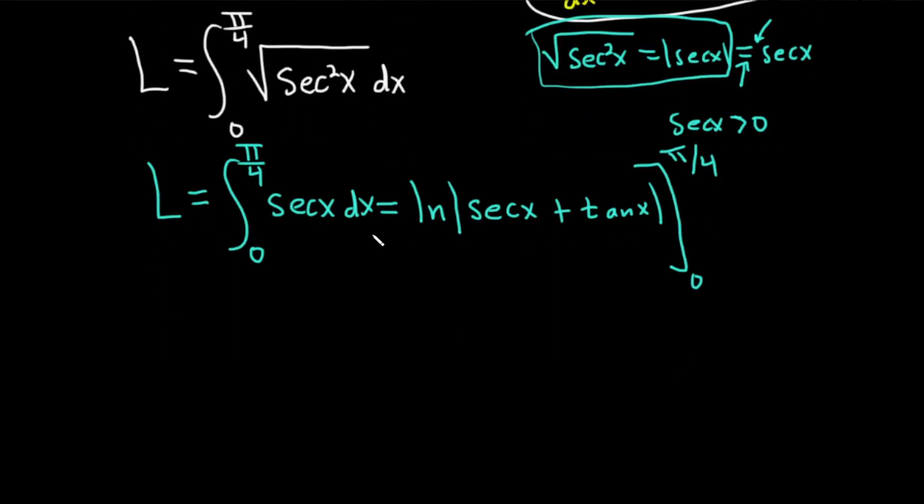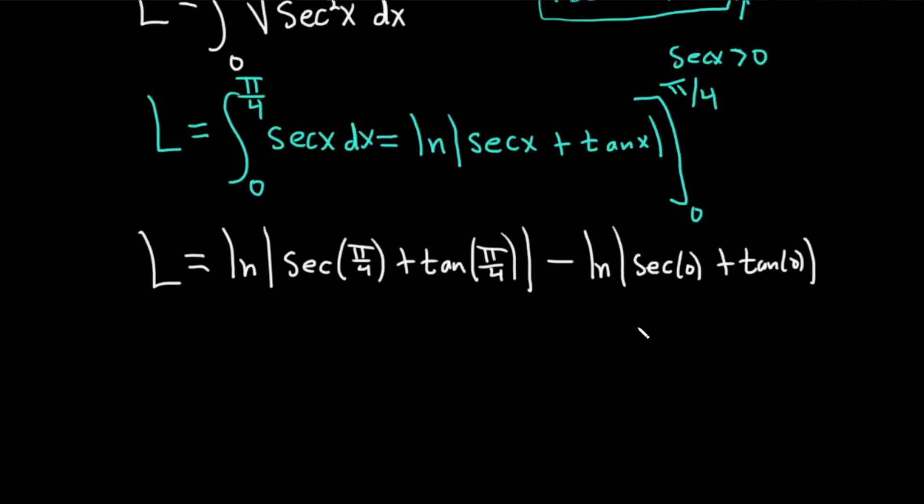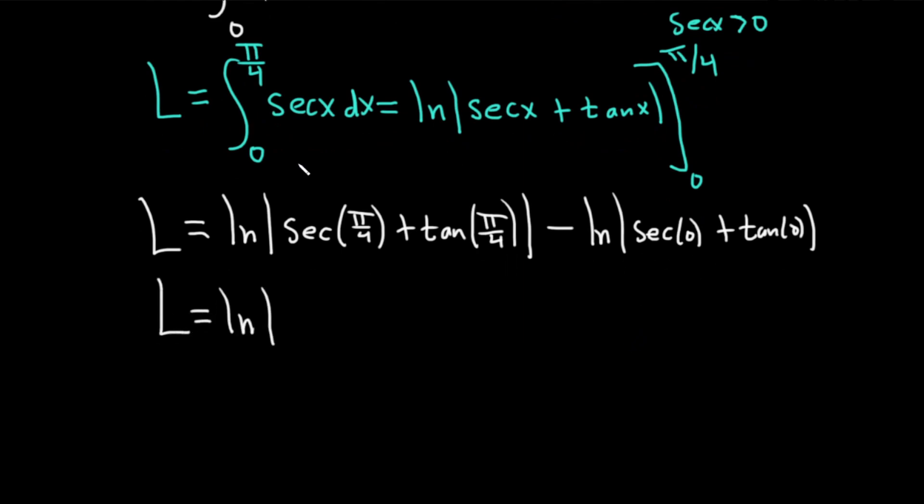And now we plug in the numbers. So as always, you plug in the top number first. So L is equal to the natural log of the absolute value of the secant of pi over 4 plus the tangent of pi over 4 minus the natural log of the absolute value of the secant of 0 plus the tangent of 0. Now the secant of pi over 4, cosine of pi over 4 would be square root of 2 over 2. Secant is 1 over cosine, so you flip the result. So it's 2 over root 2. Tangent of pi over 4 is 1. Secant of 0 is 1 and tangent of 0 is 0.